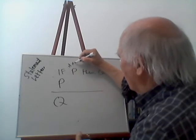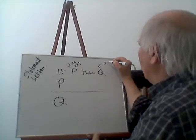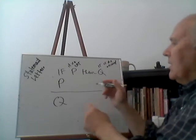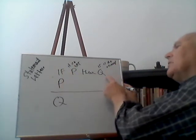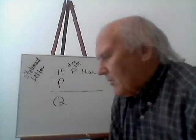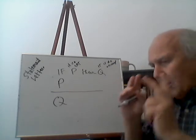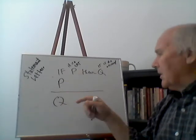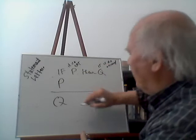Let's say P stands for 'it is a cat' and Q stands for 'it is an animal.' So the argument is: if it is a cat, then it is an animal — first premise. It is a cat — second premise. From these two premises, something follows necessarily: it has to be an animal. If P then Q, P, therefore Q. Any argument that has that form is a valid argument — it doesn't matter what you substitute for P and Q.